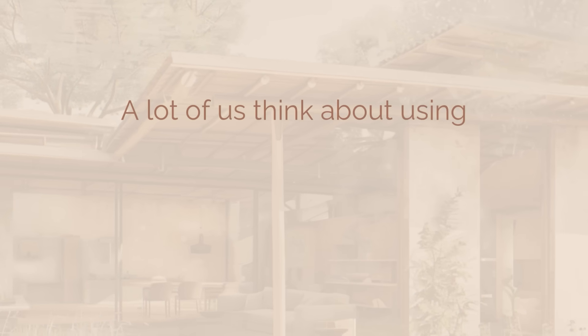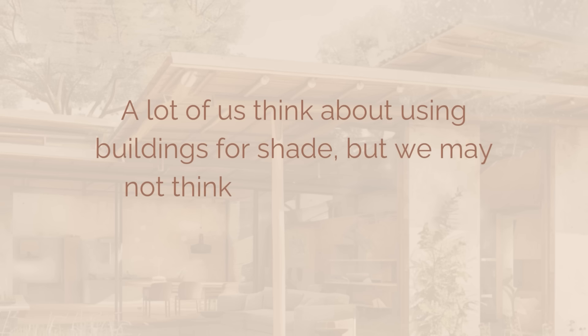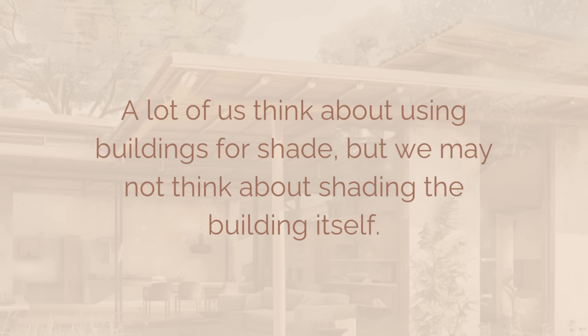Passive cooling tip number three is shading. Shading is one of the simplest and most effective ways to reduce solar heat gain — it's classic for a reason. A lot of us think about using buildings for shade, but we may not think about shading the building itself, which can make a huge difference. Here are three shading techniques you can use to keep your home cooler.